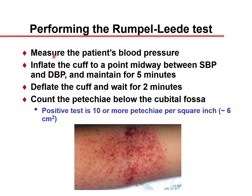To perform the Rumpel-Leede test, measure the patient's blood pressure and inflate the cuff to a point midway between systolic and diastolic pressure, maintaining it for 5 minutes. After deflating the cuff, wait 2 minutes and count the number of petechiae below the antecubital fossa. A positive test is 10 or more petechiae per square inch, approximately 6 per square centimeter.